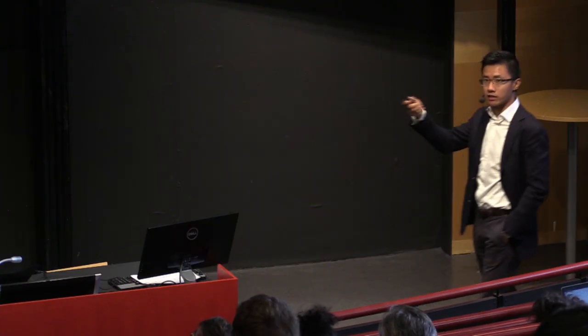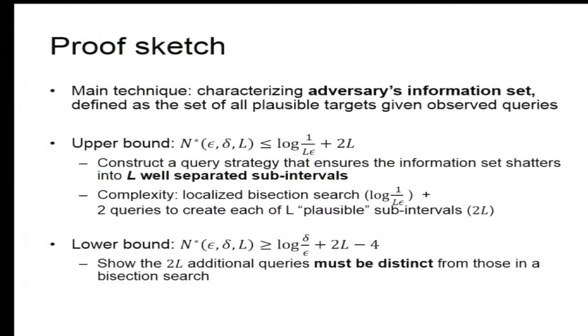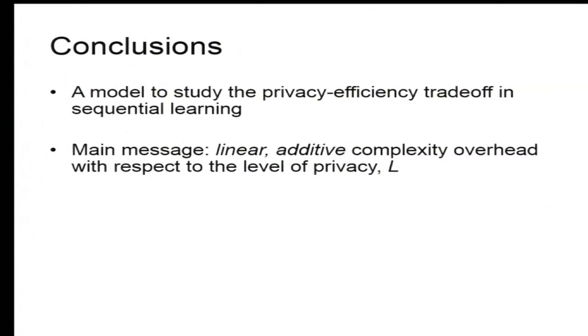Now, a brief note about the proof sketch. The main technique is to characterize the adversary's information set, which is defined by, given the queries, what are the plausible targets that are consistent with what I see. So we're just going to be tracking the evolution of this kind of set. For the upper bound, we construct explicitly a query strategy that ensures the information set shatters into L separate locations to show that the adversary cannot be sure which location actually contains the true answer. And the complexity comes from the fact that we'll do a localized bisection, getting the log factor, plus two queries to create each of the other confusing locations. Therefore, 2L. It's very simple. Binary plus 2L. Now, the lower bound, we want to show the converse. It's a little trickier because we want to show that 2L cannot be combined with those bisection search. It has to be distinct. And in that, we use a combinatorial argument that's based on recursion, and that completes the proof.